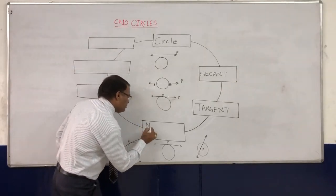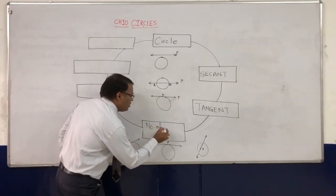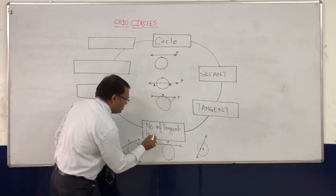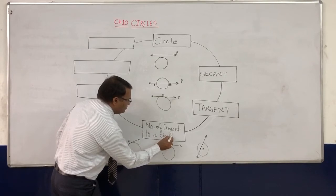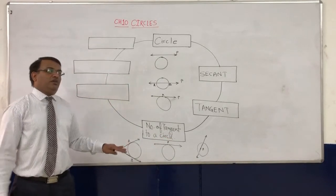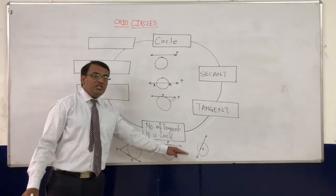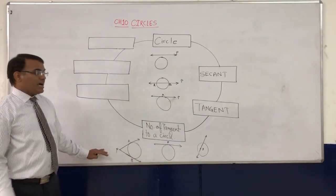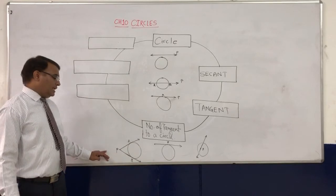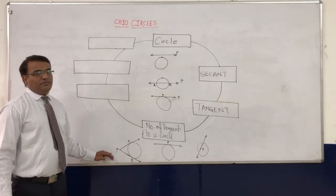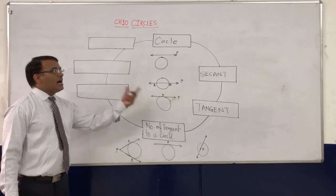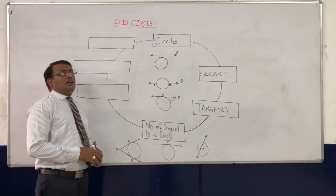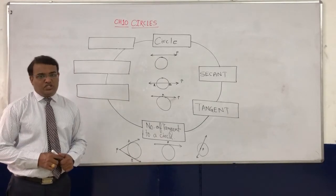So the third important point is: number of tangents to a circle. There are three different cases: point is inside — no tangent; point is on the circle — only one tangent; point is outside of the circle — then there are at most two tangents. This covers half of the topic, and the remaining half is some properties of the tangent.